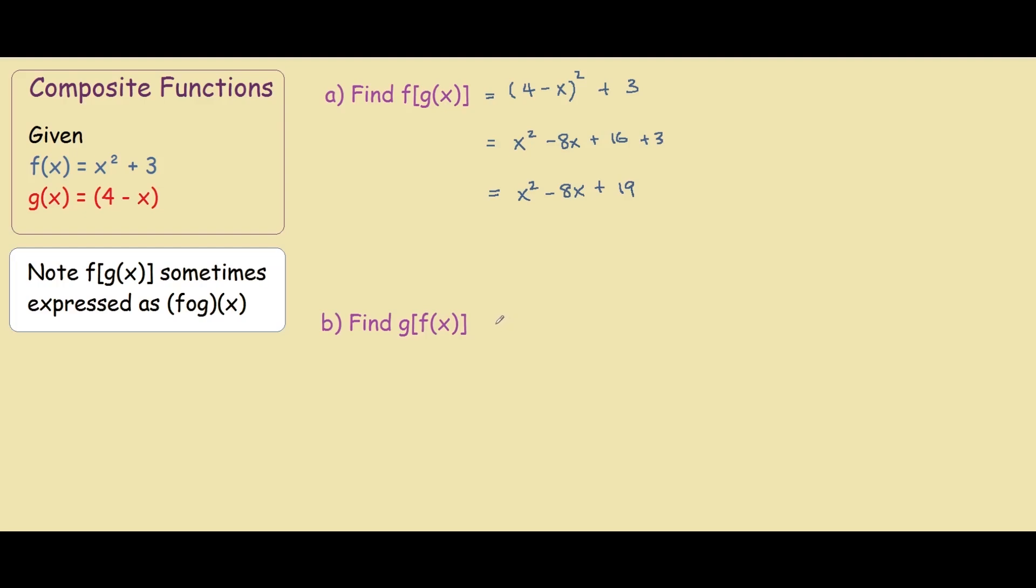If we solve this notation, we get 4 minus x. But instead of x, we have x squared plus 3. Moving this out, we get negative x squared and 4 minus 3 is plus 1.